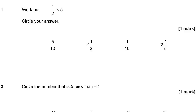Question 1: Work out a half times 5. Normally when we want to find a fraction of a number, we would divide through by the number on the bottom and times through by the number on the top. But that doesn't give us a whole number here because 2 doesn't divide into 5 nicely. As an alternative approach, I could rewrite 5 as 5 over 1 and use the rules for fraction multiplication instead.